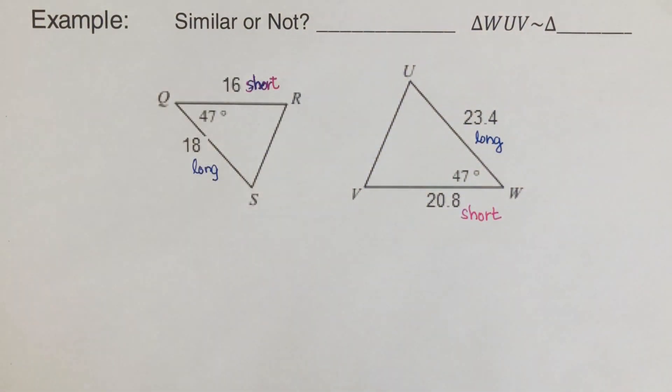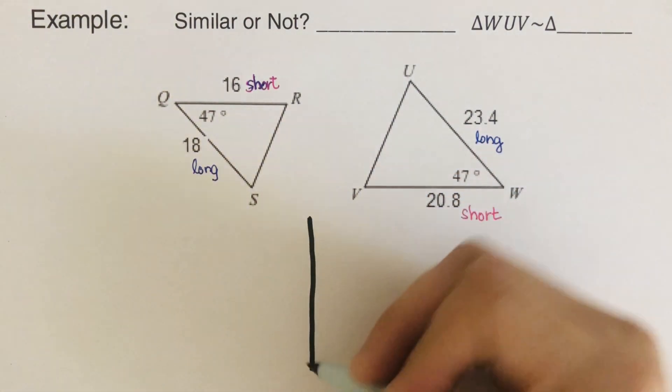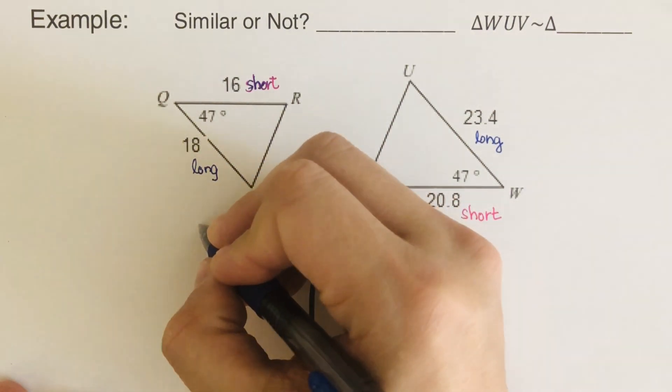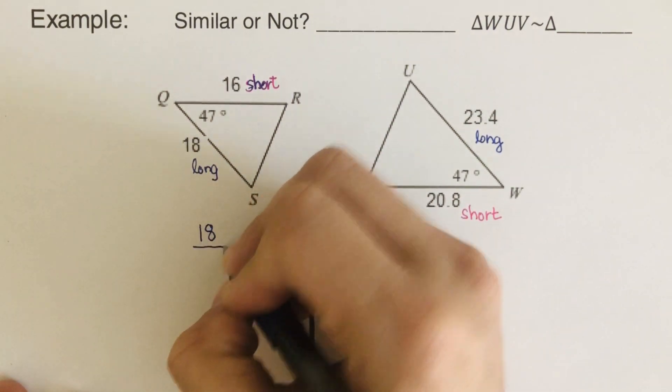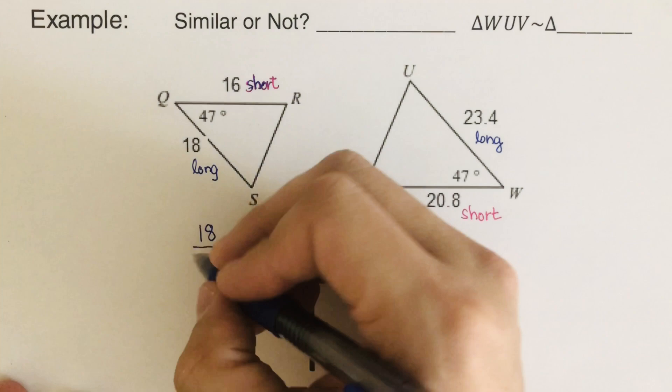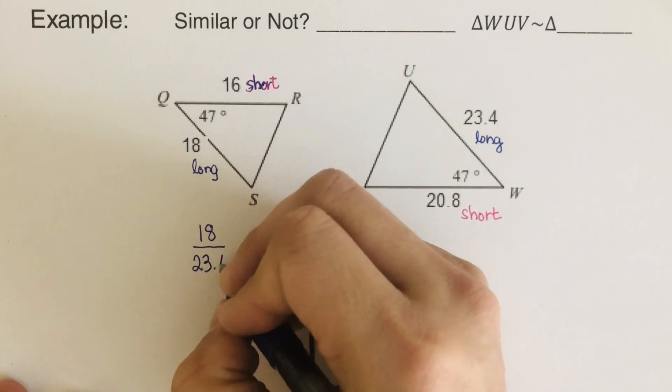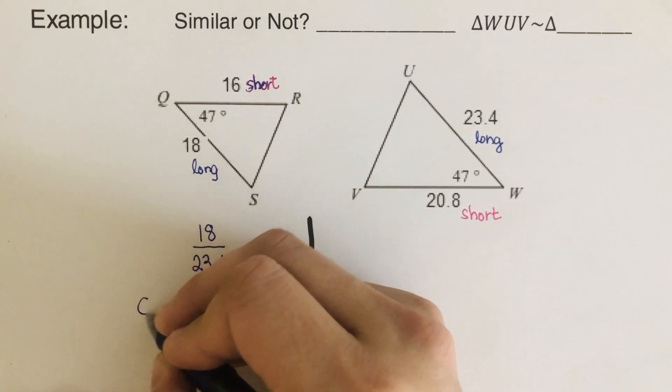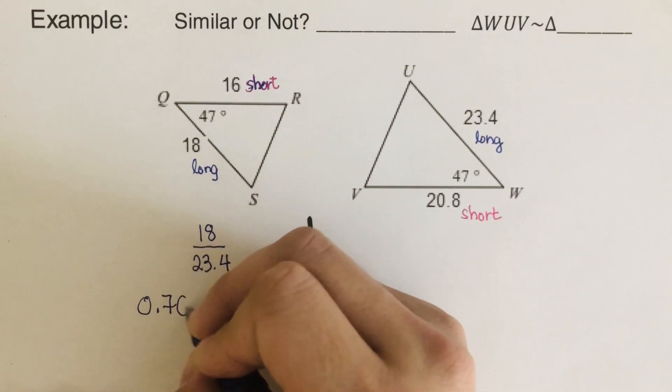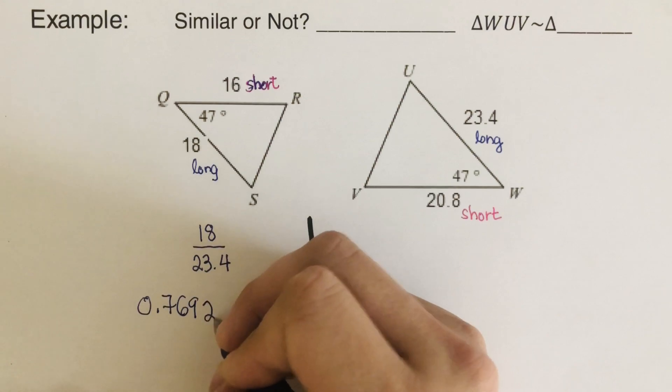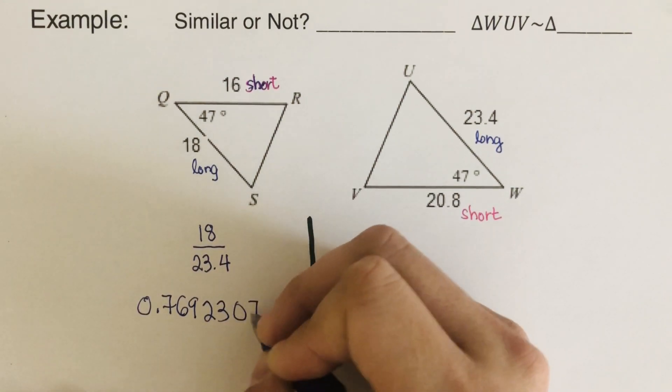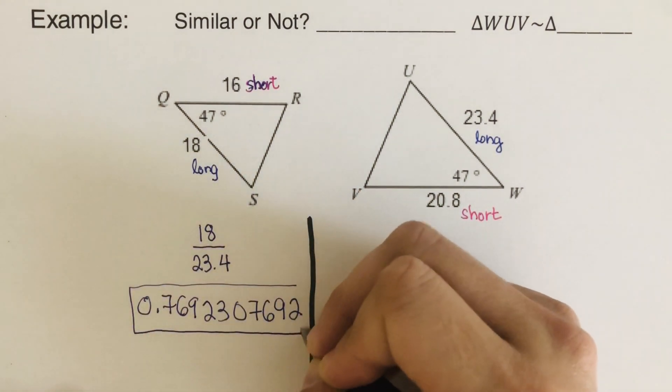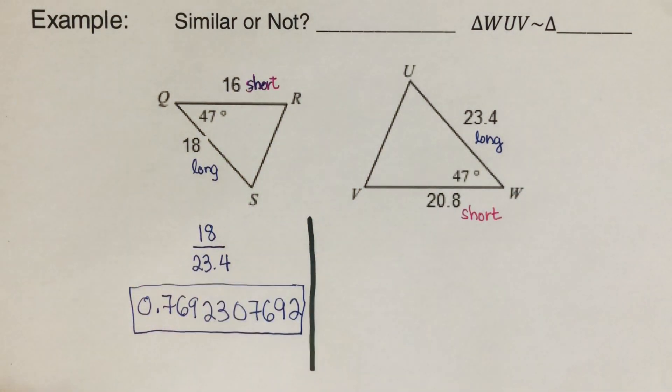Okay, now the next thing that we do is to partner them up, we make a fraction. So that would be we start with the long. So that is 18 divided by or 18 over 23.4. Now, if we use calculator, that would give us 0.7692307692. So this is the decimal version for that.